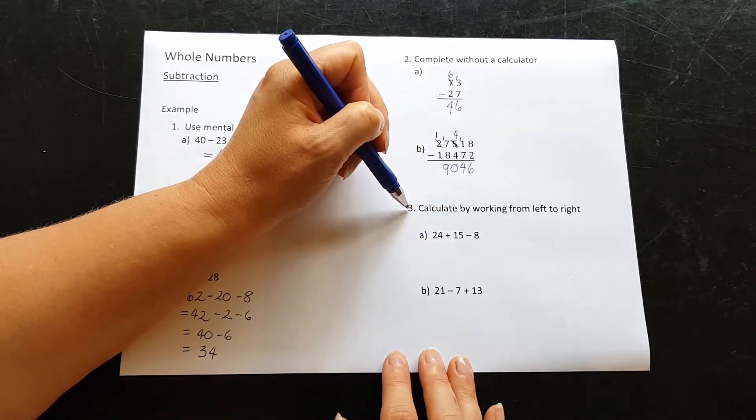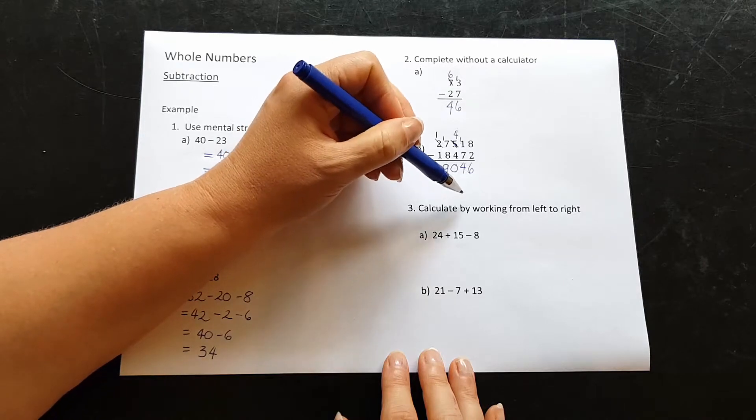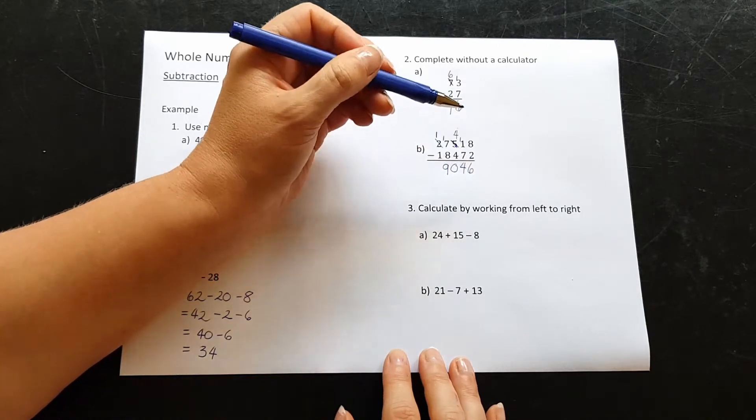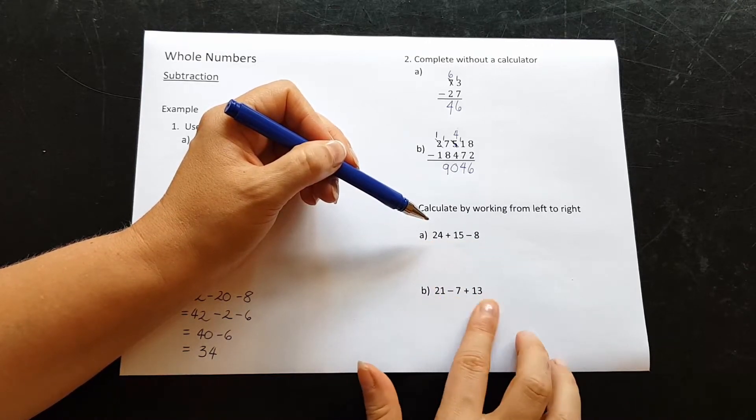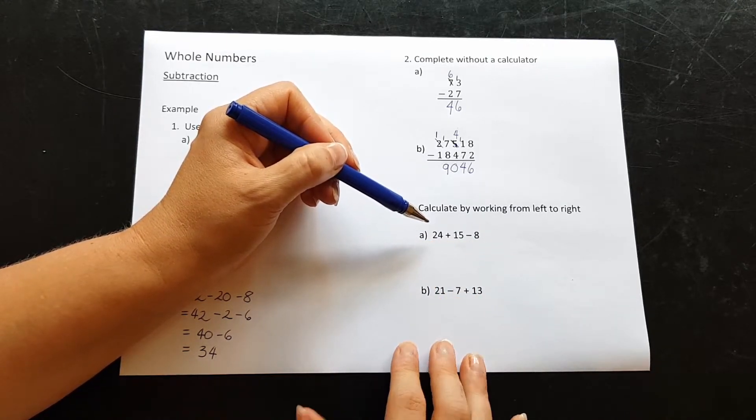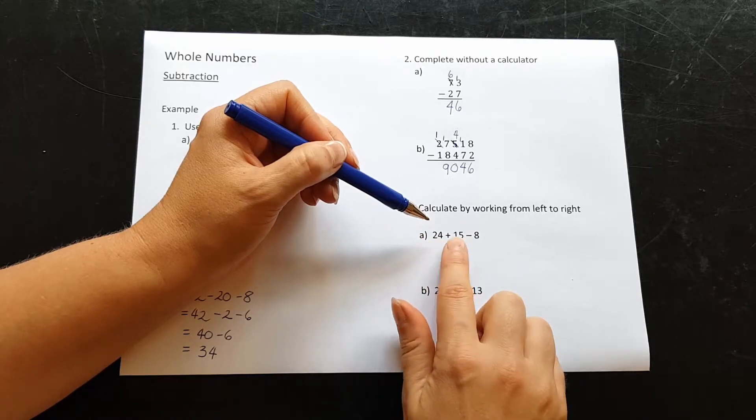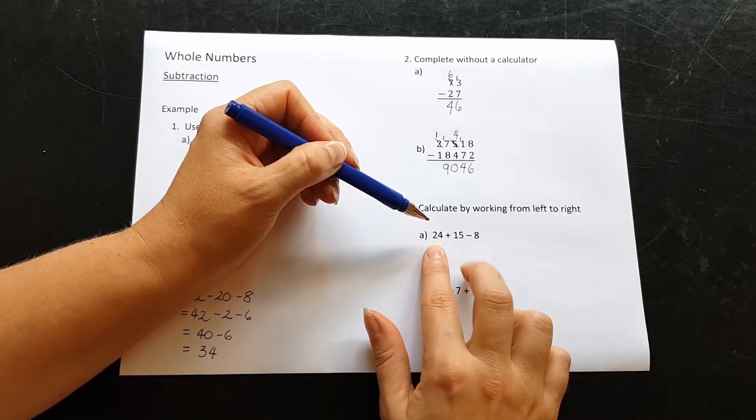For question 3, we want to calculate by working from left to right. We have a mixture here of addition and subtraction in both of these questions. So we have to start from left. We want to do these ones first and then that one.